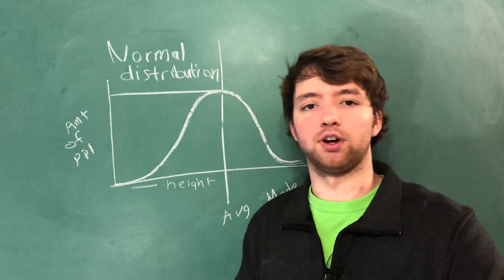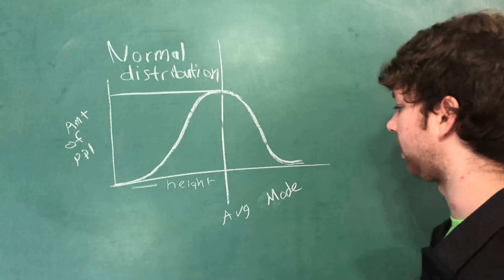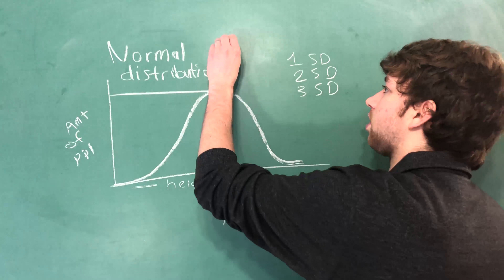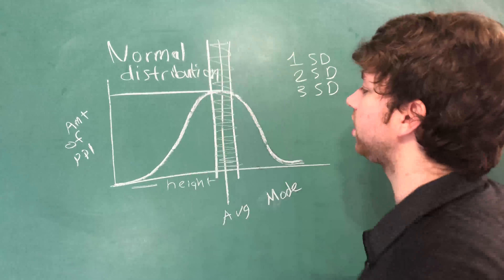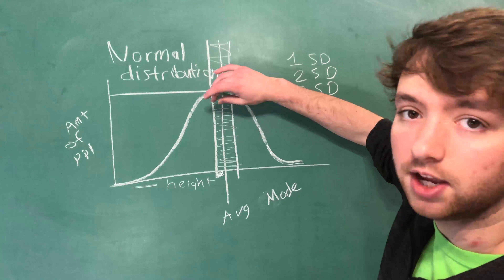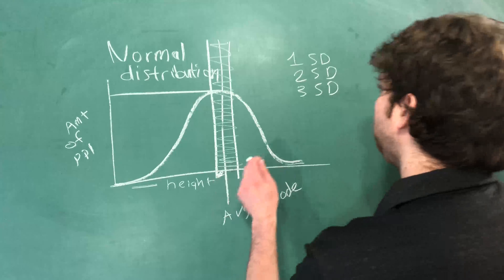So what is the standard deviation? It's essentially a measure of how far something deviates from this middle point, and it's split up into sections: one standard deviation, two standard deviations, and three standard deviations. A person who is about one standard deviation away from the center point is pretty close to the mean. We can go a step further and grab people at two standard deviations — those are people who are not super short and not super tall.